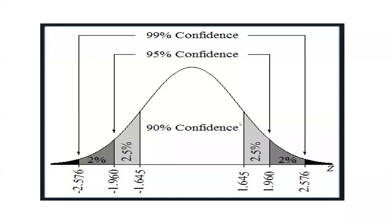Hi everyone. Let's begin. How can we read the normal distribution Z-table? That's the most difficult part — determining where our values are falling. This is the normal distribution curve, and these are the critical values. This is the 90% confidence level — that is the acceptance level. If your values are falling between 1.645 and minus 1.645, that is the acceptance region. Beyond 1.645 and minus 1.645, that is the rejection region.